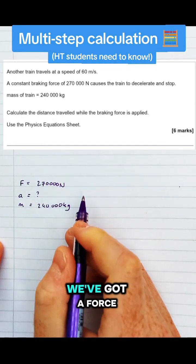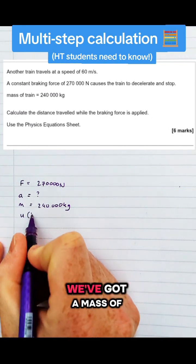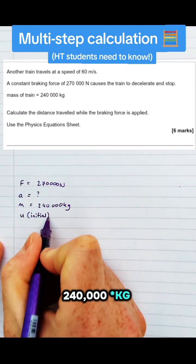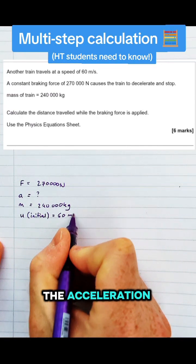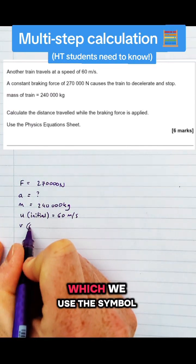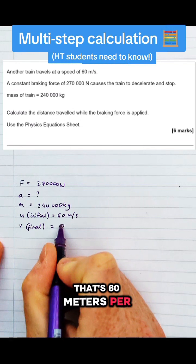So in this question we've got a force which is 270,000 newtons, we've got a mass of 240,000 newtons, we don't know the acceleration, we do know the initial velocity which we use the symbol u for, that's 60 metres per second.